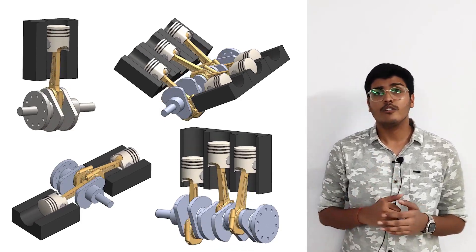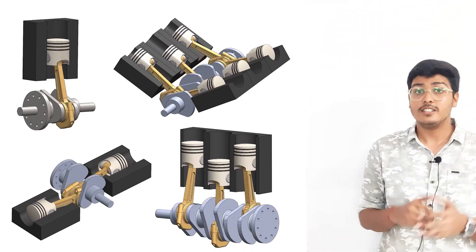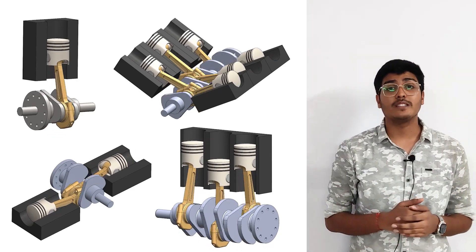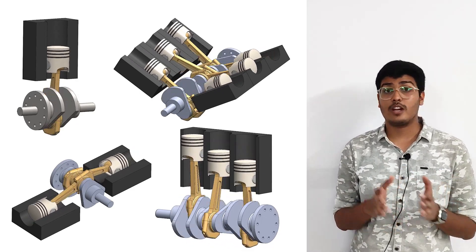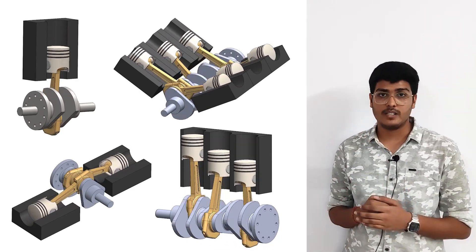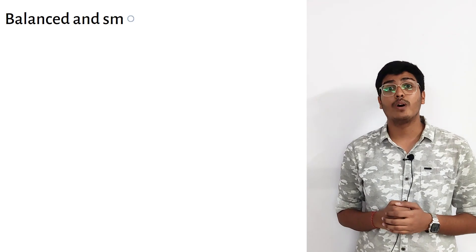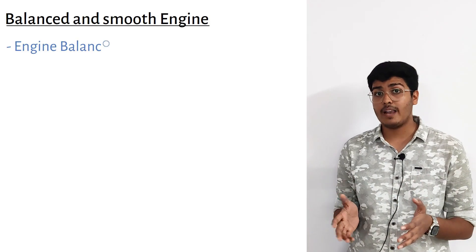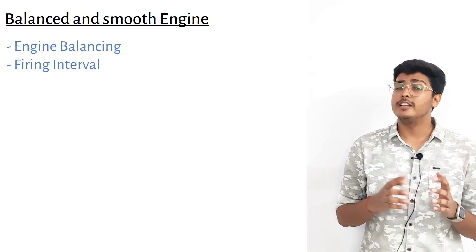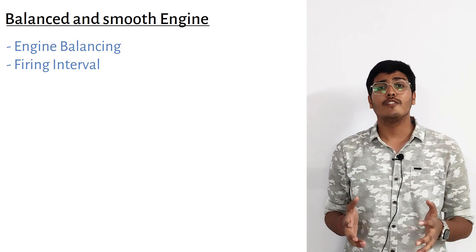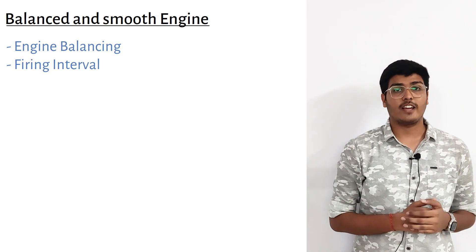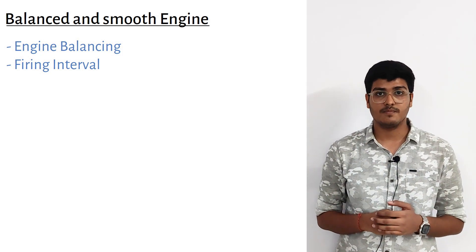For finding an engine that is perfectly balanced and runs smoothly, on the basis of engine layout and number of cylinders, it depends upon two important parameters: number one is engine balancing, and number two is the firing interval. In this video we will learn about engine balancing and firing interval of four-stroke engines.